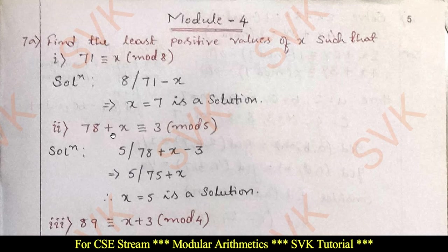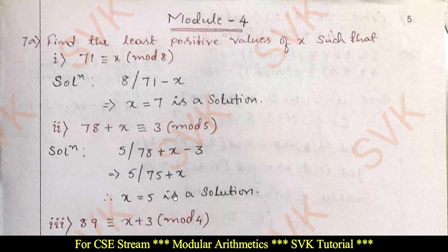Moving on to the next question: 78 + x ≡ 3 (mod 5). Here, 78 + x − 3 is divisible by 5. For what value of x will this be divisible by 5? By giving x equal to 5, we get 75 + 5 equals 80. 80 is divisible by 5. That is the required solution.